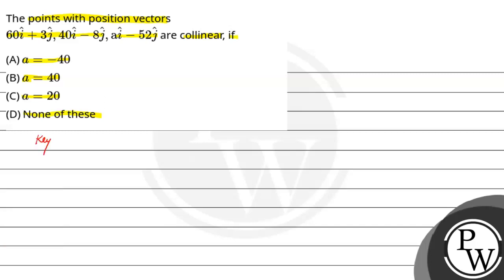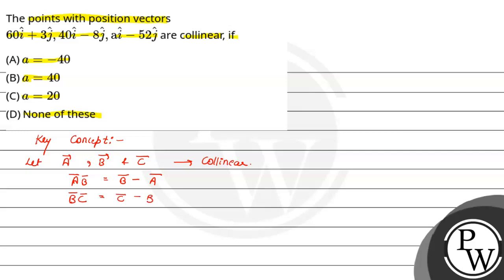Now let's see the key concept for this question. The key concept here is the condition for collinearity. If we have vectors A, B, and C that are collinear, then vector AB = B - A, and the condition for collinearity is: lambda times vector AB equals vector BC.